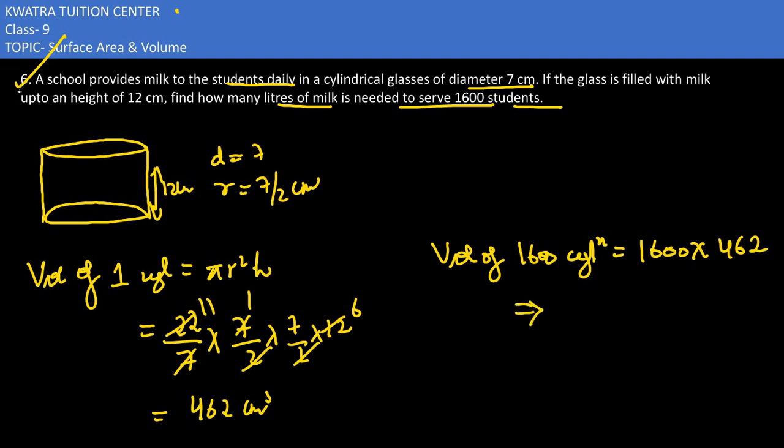And if you want to convert it into liters, divide by 1000. Two zeros can be cancelled, and we have 10 in the denominator.